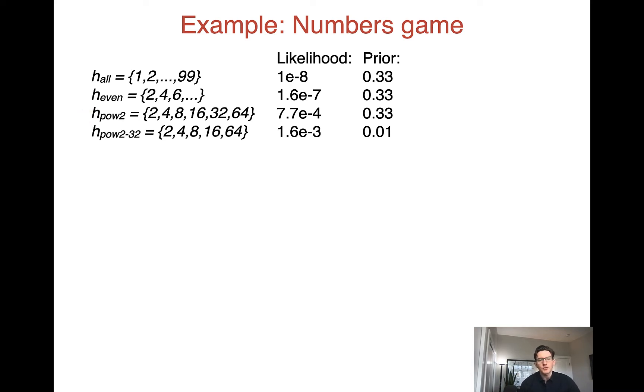So recall that we put a prior on our hypotheses based on how intuitively reasonable they seem. That is, before we saw any data, how likely we are to think that each of these hypotheses was the process that was generating the data that we saw. That is, our set of numbers. And so I put a prior here. I'm making the numbers simple for our case. Intuitively, we think that the powers of 2 minus 32 is a very unreasonable hypothesis. So I'm giving it a low prior, and I'm giving us a uniform prior over the other three hypotheses.